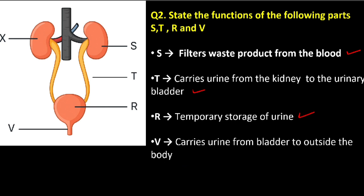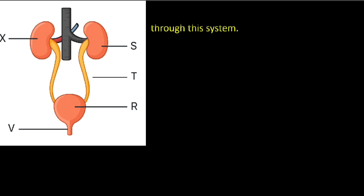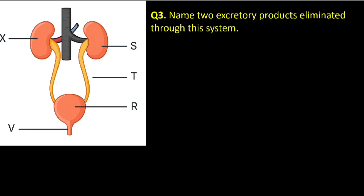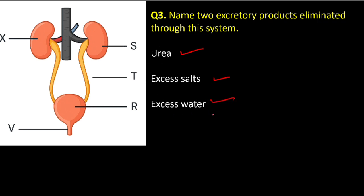Let us continue to question number three: name two excretory products eliminated through this system. We have urea, we have excess salts, and we also have excess water. In exams, don't say 'salt' or 'water' — say 'excess salt' and 'excess water.' So we are done with the first diagram.